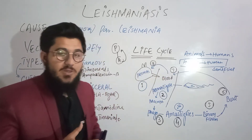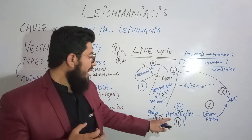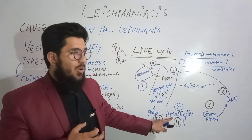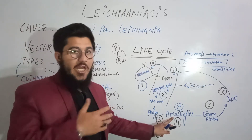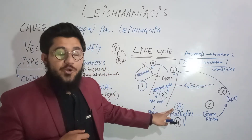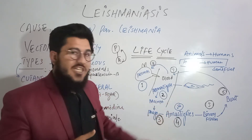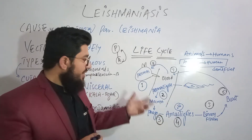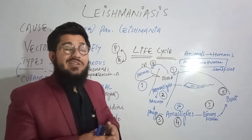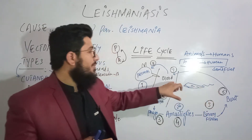When macrophages find these promastigotes, they endocytose them — phagocytosis is performed. Then these promastigotes convert into another shape named the amastigote. The difference: promastigotes have a flat structure with a flagellum, whereas amastigotes have a round or oval shaped structure without a flagellum. These amastigotes then start dividing by binary fission, increasing in number until the phagocytes burst and the amastigotes become freely available in the blood.